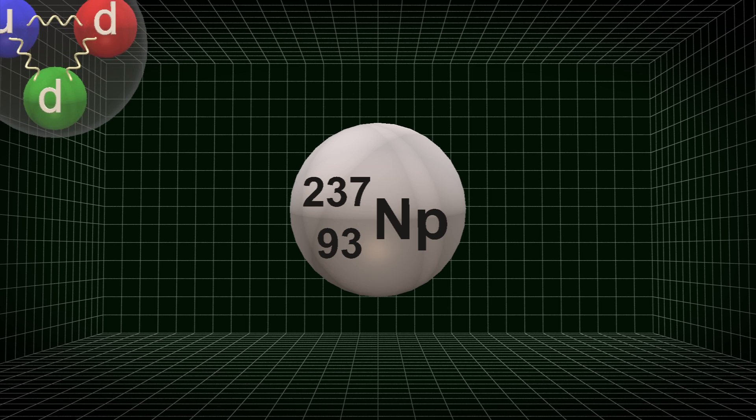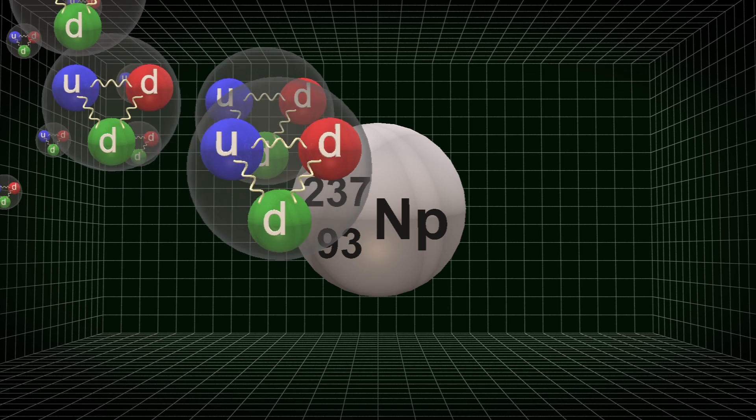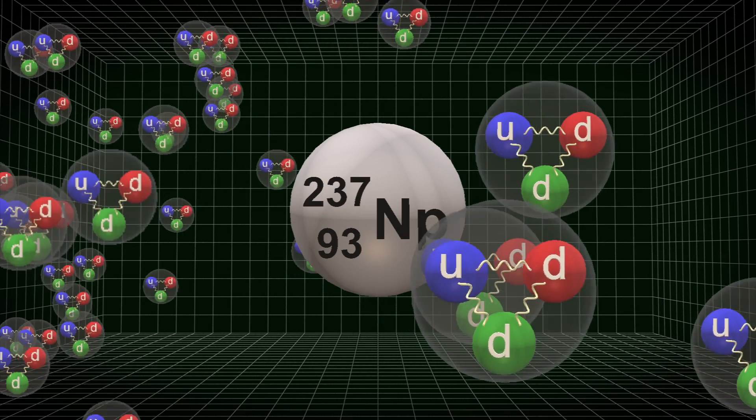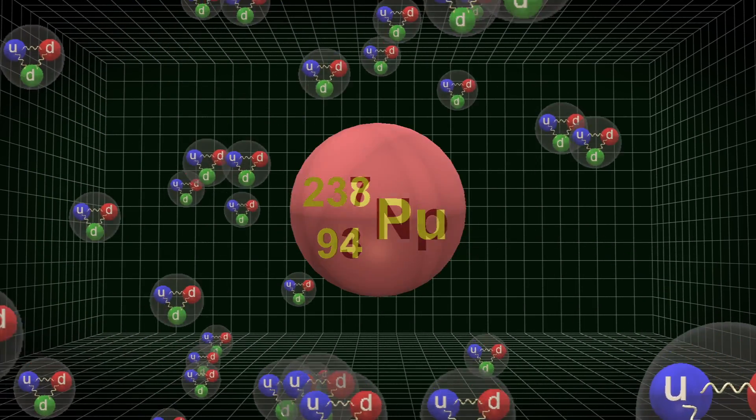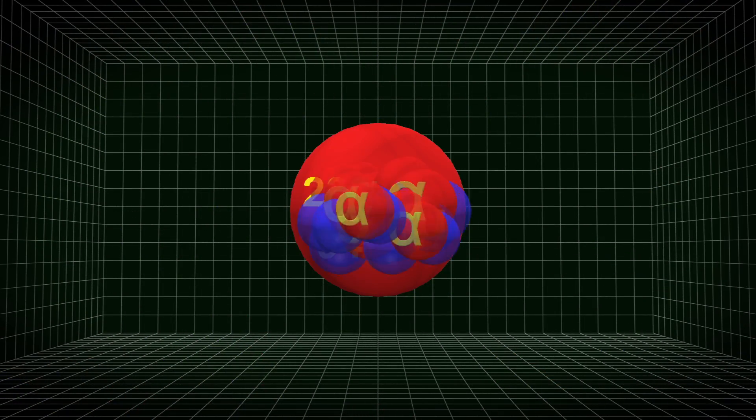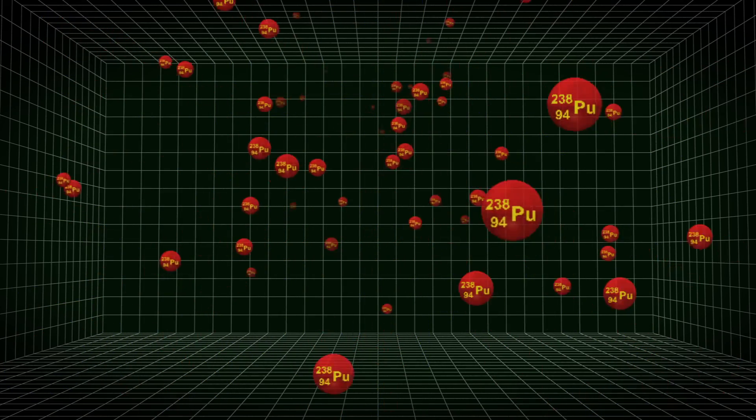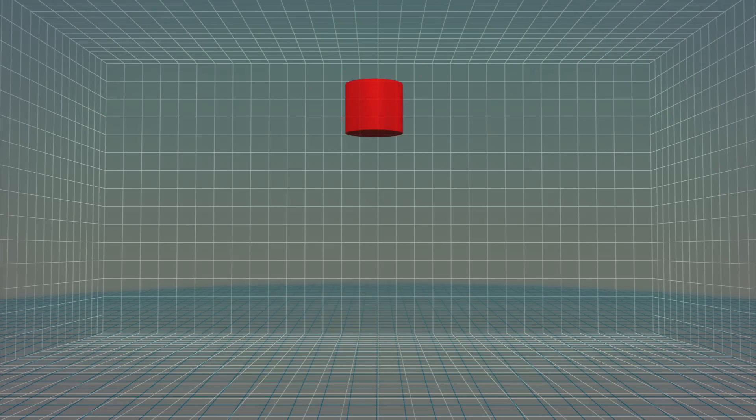Neptunium-237 can be placed into a fast reactor and bombarded with neutrons. The product is plutonium-238, which emits large volumes of alpha particles but low volumes of other radiation, making it an ideal heat source.